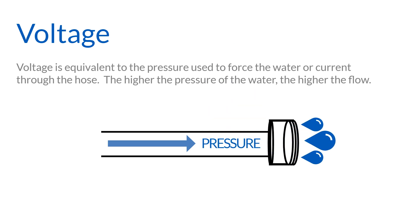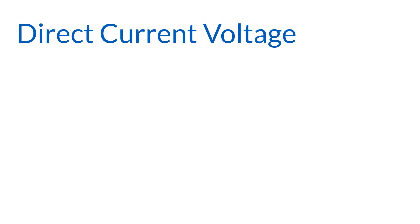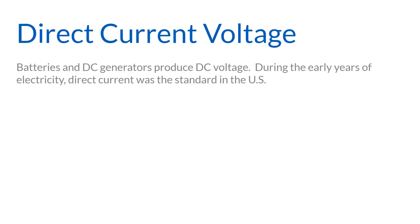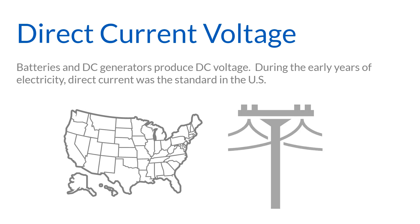The higher the pressure of the water, the higher the flow, and vice versa. There are two main types of currents: direct current or DC, and alternating current or AC. With direct current, voltage forces the electrons to flow continuously in one direction through a closed circuit, like runners racing around a track. This type of voltage is called direct current or DC voltage. Batteries and DC generators produce DC voltage. During the early years of electricity, direct current was the standard in the US, but direct current is not easily converted to higher or lower voltages and thus would not travel well over long transmission lines.